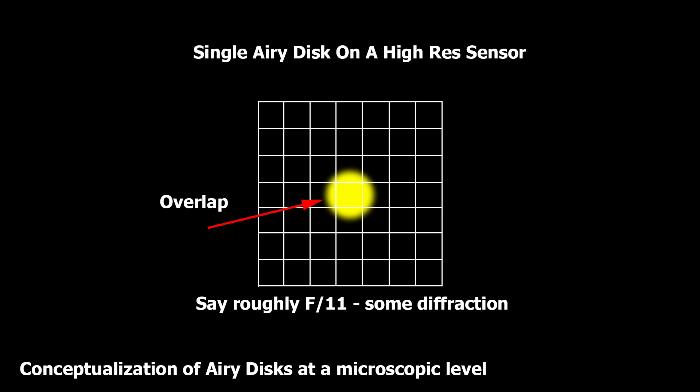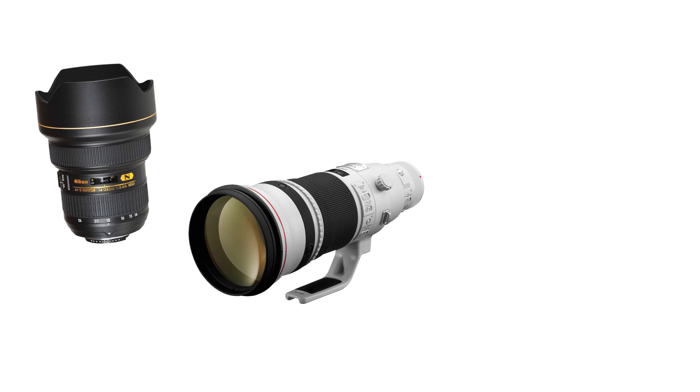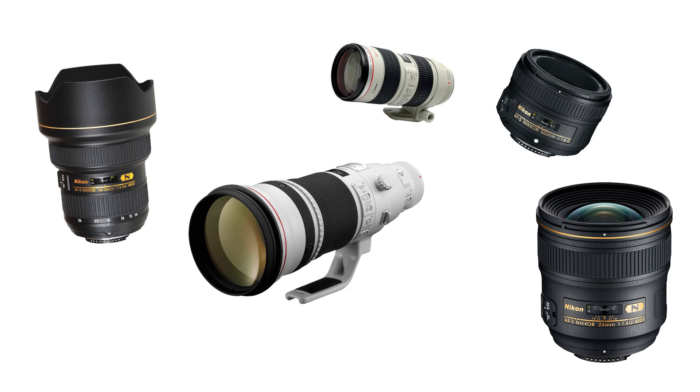Airy disks are the same size at a given f-stop, and that actually shows us why a high-resolution sensor runs into diffraction sooner than a lower-resolution sensor. Bottom line: as we stop the lens down, diffraction increases and causes an overall softening to the image. This is true for all lenses, even top-of-the-line stuff — it's actually a property of physics, not a defect in manufacturing.